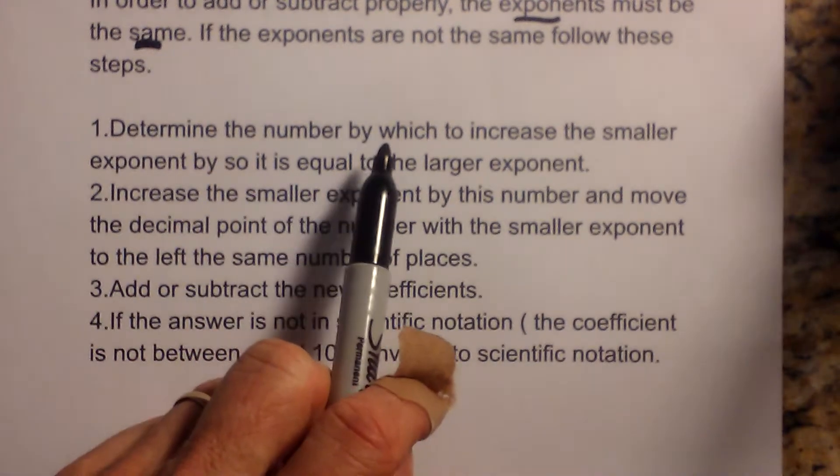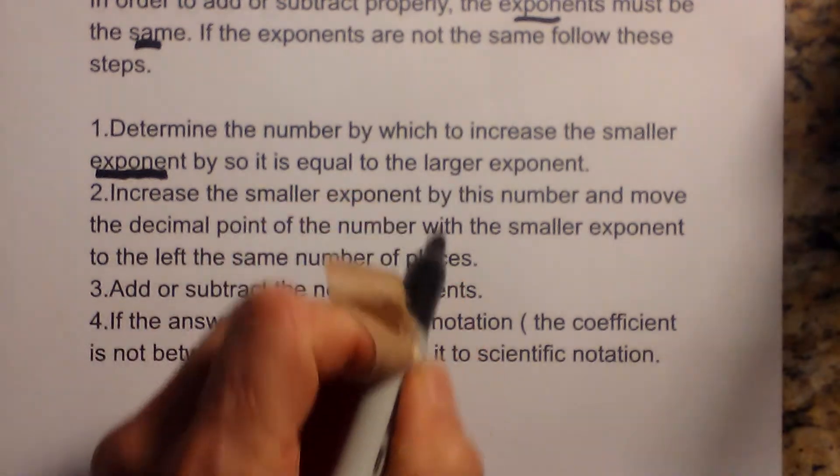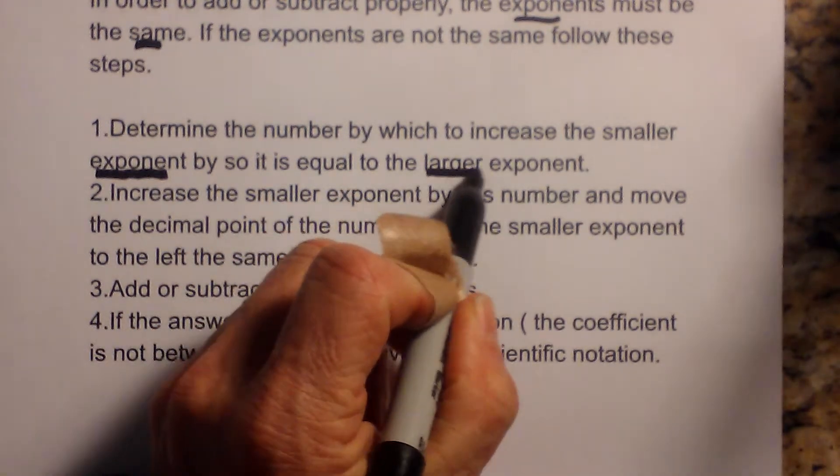Determine the number by which to increase the smaller exponent. So what you do is increase the smaller exponent to equal the larger exponent.